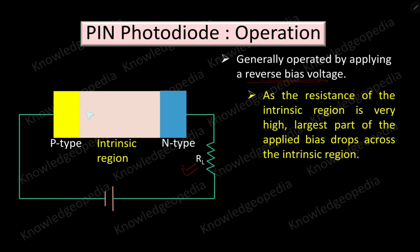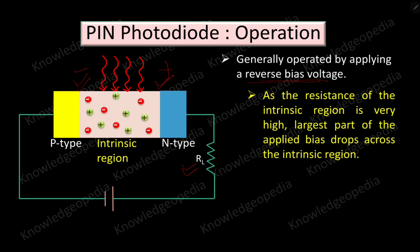When reverse bias is applied, since the resistance of the intrinsic region is very high, the largest part of the applied bias drops across this intrinsic region — giving a negative potential on one side and positive on the other. Under this condition, if light is incident on the photodiode, it passes through the P-type region and hits the intrinsic region. If the energy of the photons is greater than the energy gap of the material, electron-hole pairs are generated in the intrinsic region.